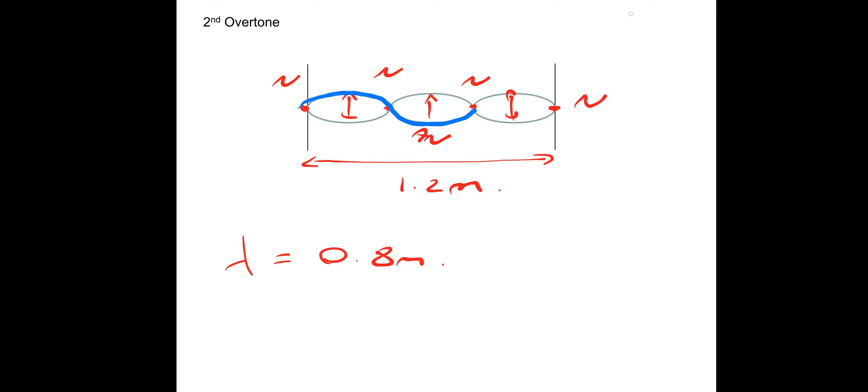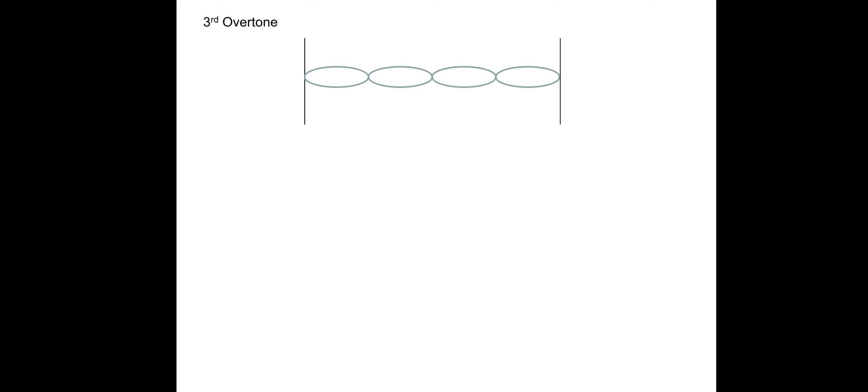Let's have a look at the third overtone. This is the last one that we'll look at. So the frequency has increased again. As always, nodes at either side. So a progressive wave is sent out from this side, it gets to the other side, it reflects back on itself and undergoes superposition. So this time we've got five nodes and four antinodes.